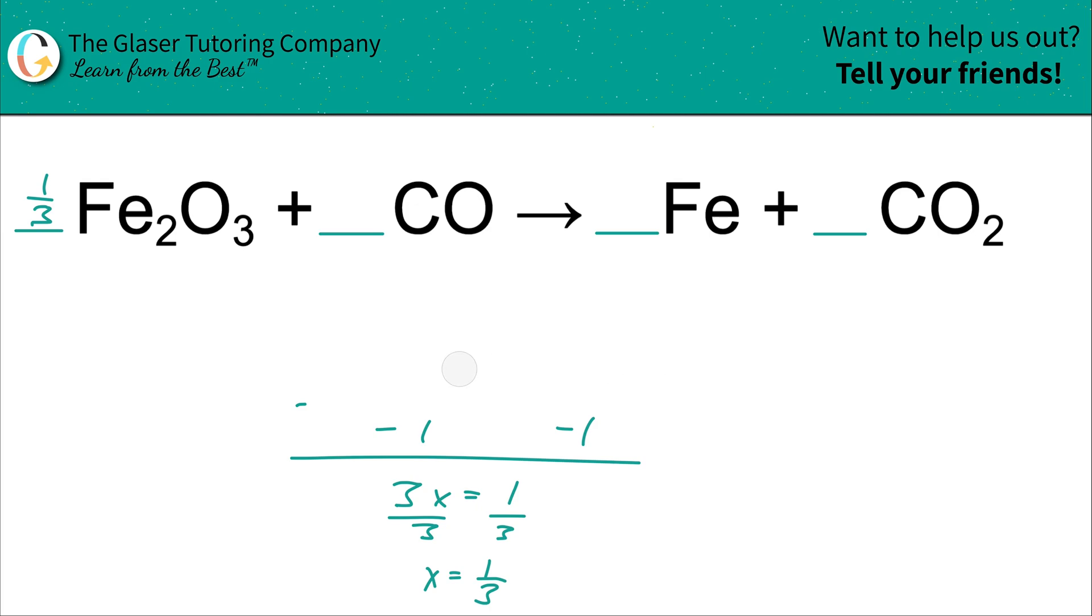Now the only thing left, and the carbon is still balanced, the only thing left to balance is the iron. Now let's take a look. How many irons do you have here on the left-hand side? Now I know this is going to sound a little weird, but you have 2 irons in this compound, but yet you're multiplying it by 1/3. So technically speaking, you have 2/3 iron. How you have to think about it is take this coefficient, 1 over 3, and just simply multiply it by the subscript of 2. That has to now equal the amount of iron you have here on the left, which is 1.